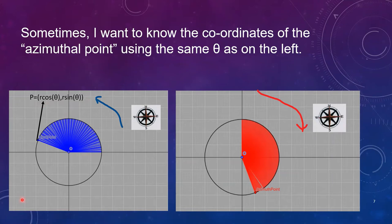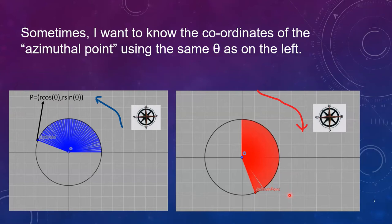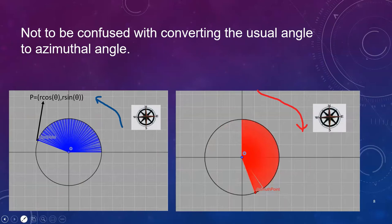So sometimes I want to know the coordinates of the azimuth point which isn't a formal concept but it's something that I've made up and that I use, but the trick is I want to use this same theta. So it's not to be confused with converting like for example when the azimuth is over here how would you measure that in the usual manner. That's not what we're doing, we're doing something else instead.